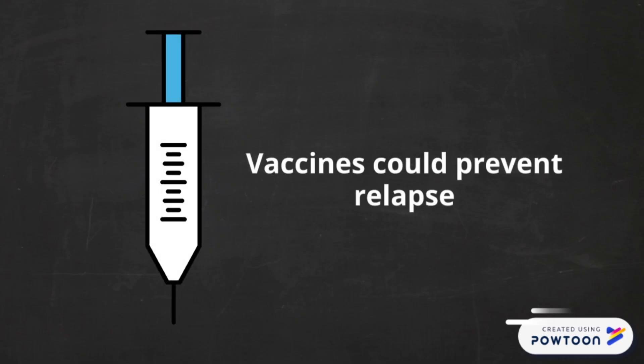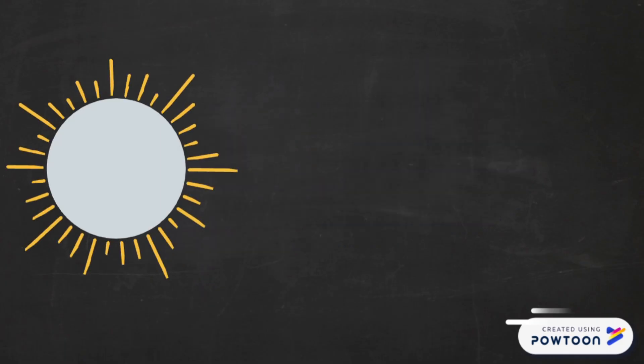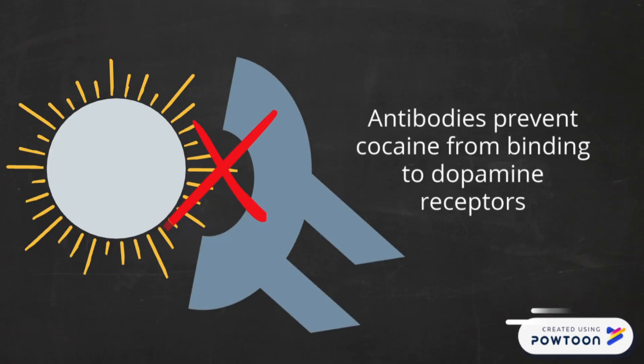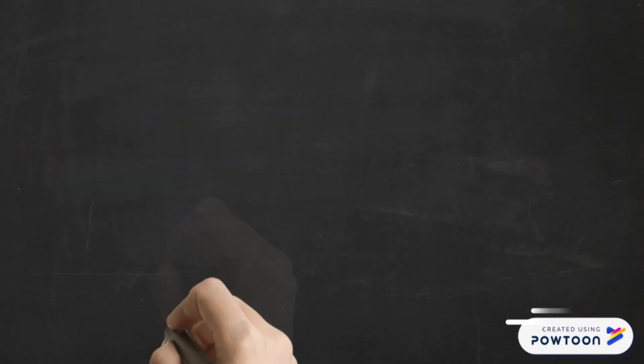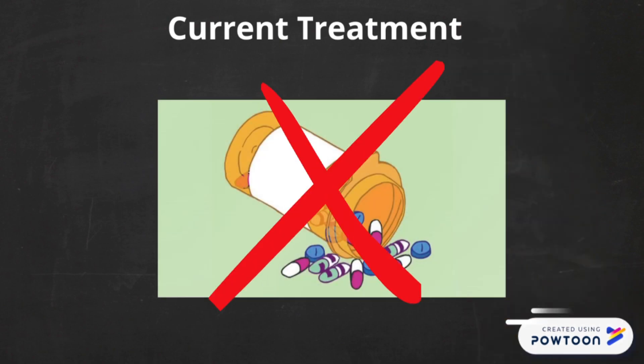Furthermore, scientists are currently creating a vaccine that could help reduce the risk of relapse. The vaccine stimulates the immune system to create cocaine-specific antibodies that bind to cocaine. The antibodies prevent cocaine from binding to dopamine receptors. There is still no current medication available to specifically treat cocaine addiction.